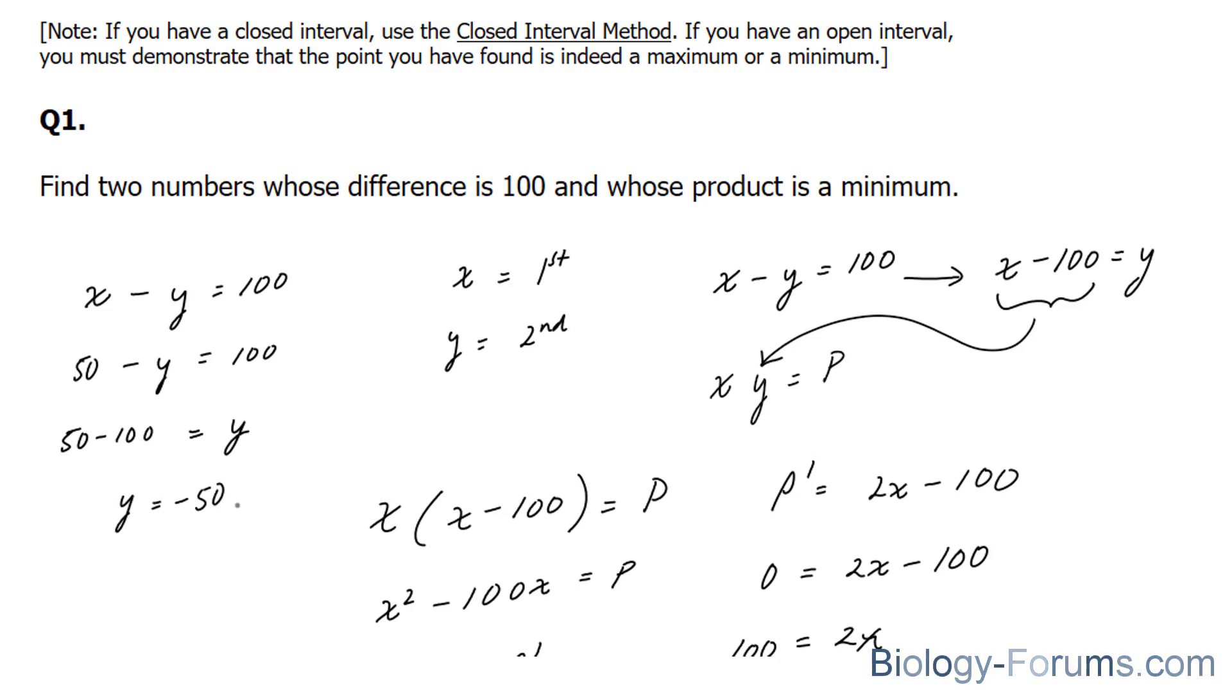So there you have it. We just found two numbers, x at positive 50 and y at negative 50, whose difference is 100 and whose product is also a minimum.